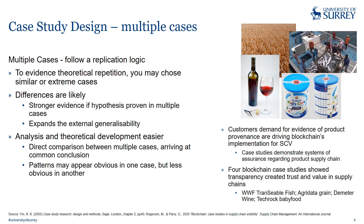The paper — hopefully you've read it — is on blockchain case studies in supply chain visibility. We did multiple case studies of the use of blockchain to provide visibility in supply chains, because customers are demanding evidence of product provenance — the history of a product. You can use blockchain and tags on goods to trace where something came from and show where it is. We used four blockchain cases: World Wildlife Fund's Traceable for fish, Agri-Data for grain, Dementor for wine, and Techrock for baby food. All of this was linked to data in a blockchain so you could see where a product had come from and see its history.